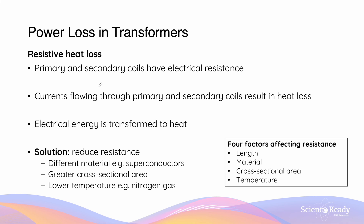The second reason for power loss in transformers is resistive heat loss. The primary and secondary coils are made of wires of a particular material, and materials usually have electrical resistance, measured in ohms. Whenever a material has electrical resistance, current flowing through it — that is, through the primary and secondary coils — will result in some degree of heat loss, meaning some electrical energy is transformed into heat.